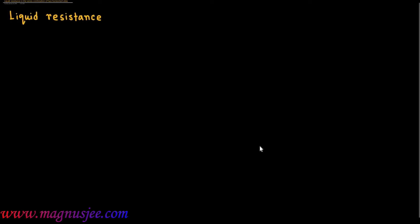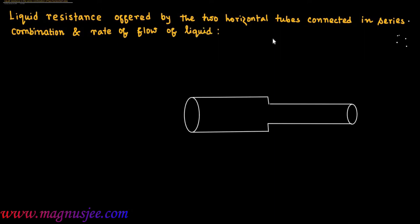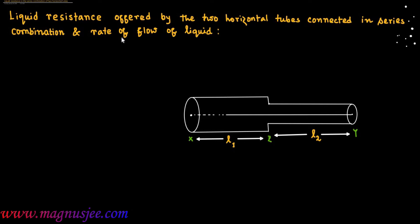We are studying liquid resistance in the series combination of two horizontal tubes. In the diagram, the two tubes are connected in series combination. XZ is the first tube and ZY is the second tube. This is the common axis of the two tubes connected in series combination.